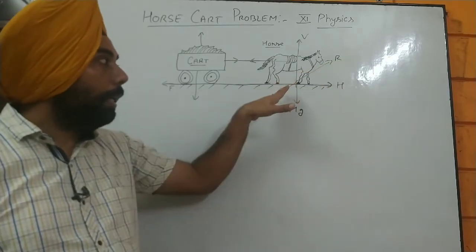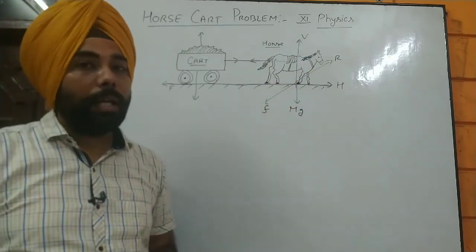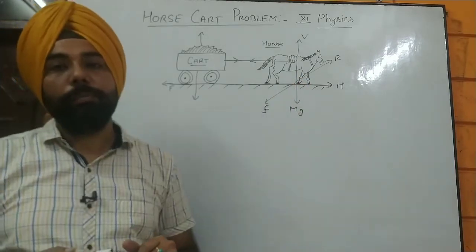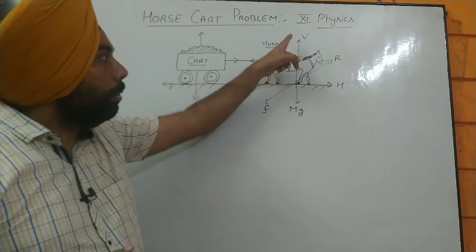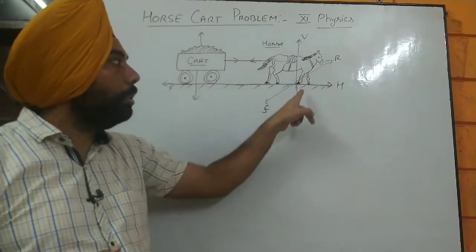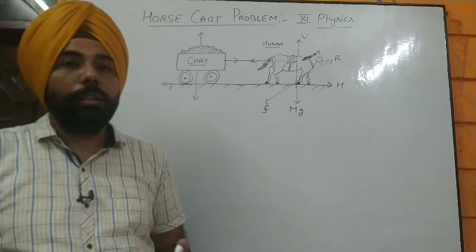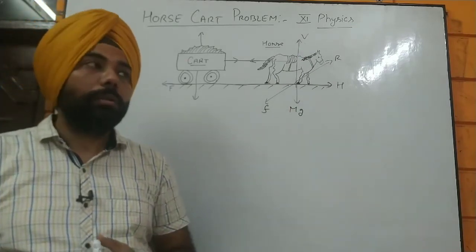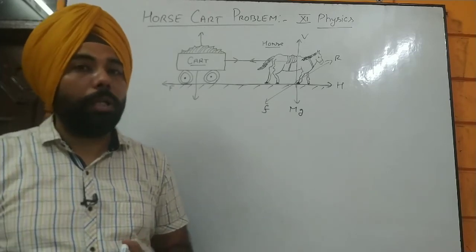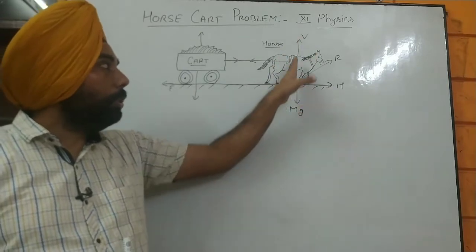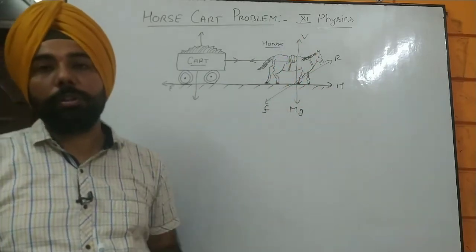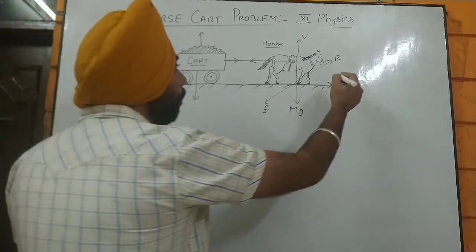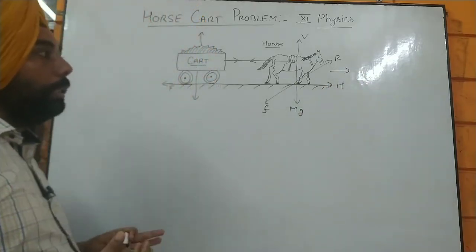We are just considering the simplest case of horizontal and vertical components. If R is at an angle, the rectangular components are R cos theta and R sin theta, where the angle is with the horizontal. The vertical component always balances the weight of the horse — if somebody slips, that is related to the center of mass shifting, and this component is responsible for the balance of the horse. The horizontal component is responsible for the forward motion of the horse.